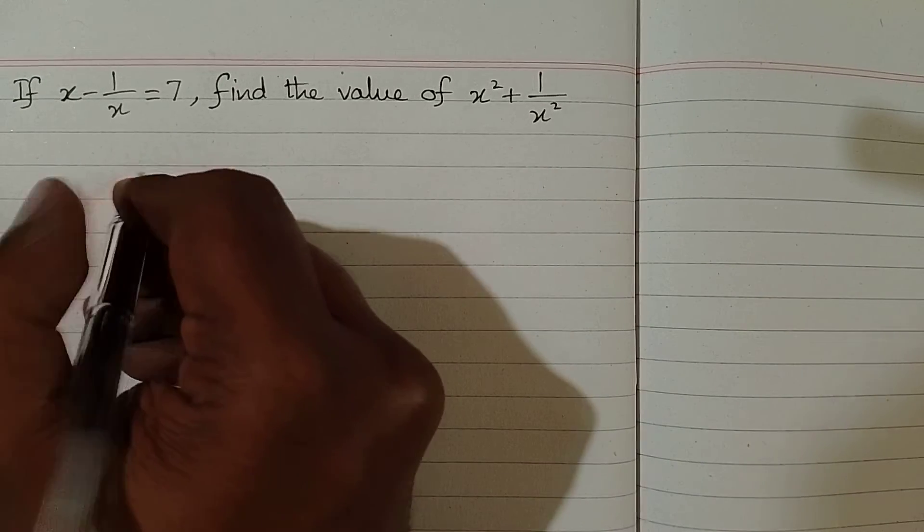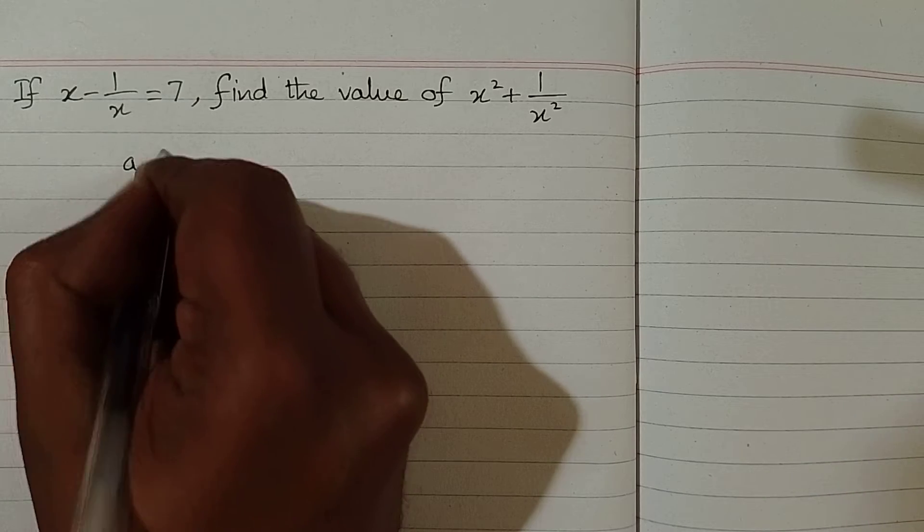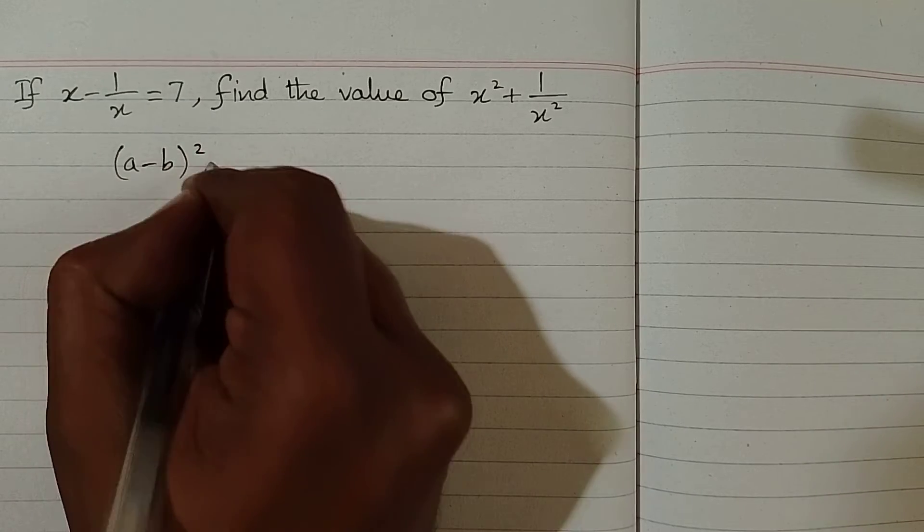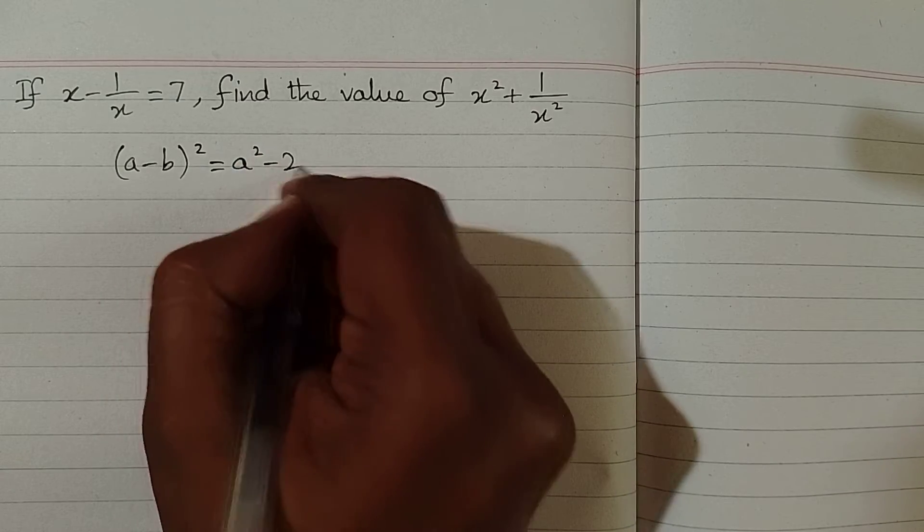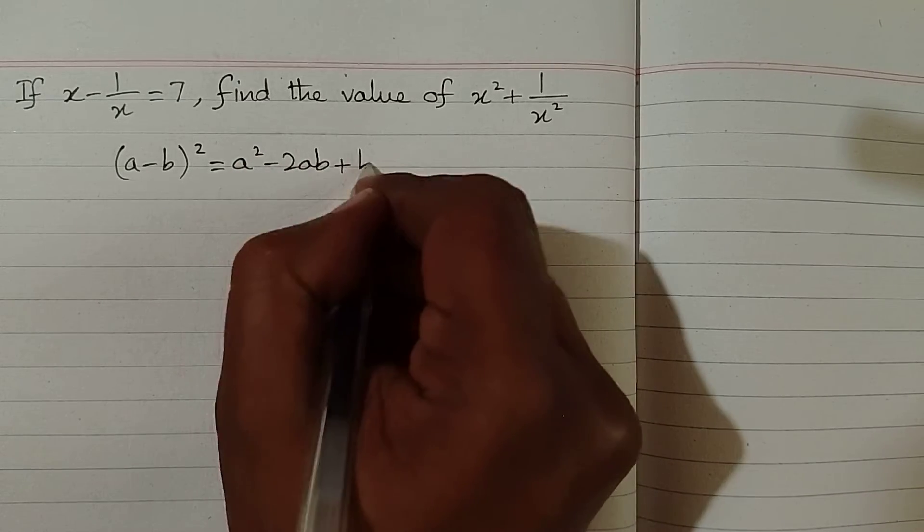In order to solve this question we can use an algebraic identity which is a minus b the whole square is equal to a square minus 2ab plus b square.